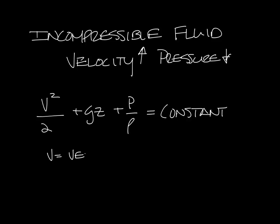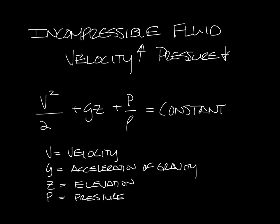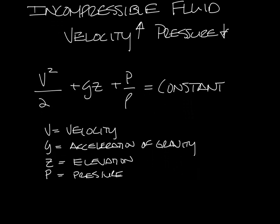V is velocity. G is the acceleration due to gravity. Z is elevation. P is the pressure. And rho is the density.